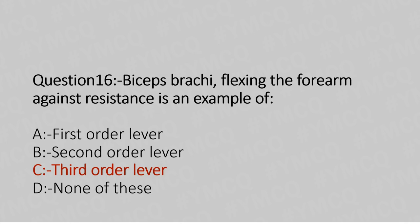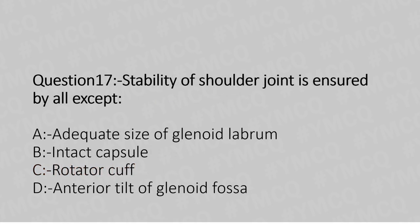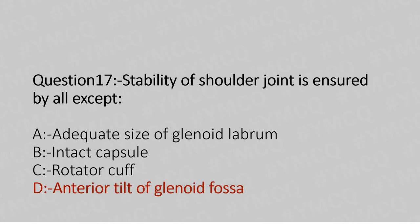Now let's move to question number 17. Stability of the shoulder joint is ensured by all except — option A: adequate size of the glenoid labrum, option B: intact capsule, option C: rotator cuff, option D: anterior tilt of the glenoid fossa. The answer is option D, anterior tilt of the glenoid fossa.